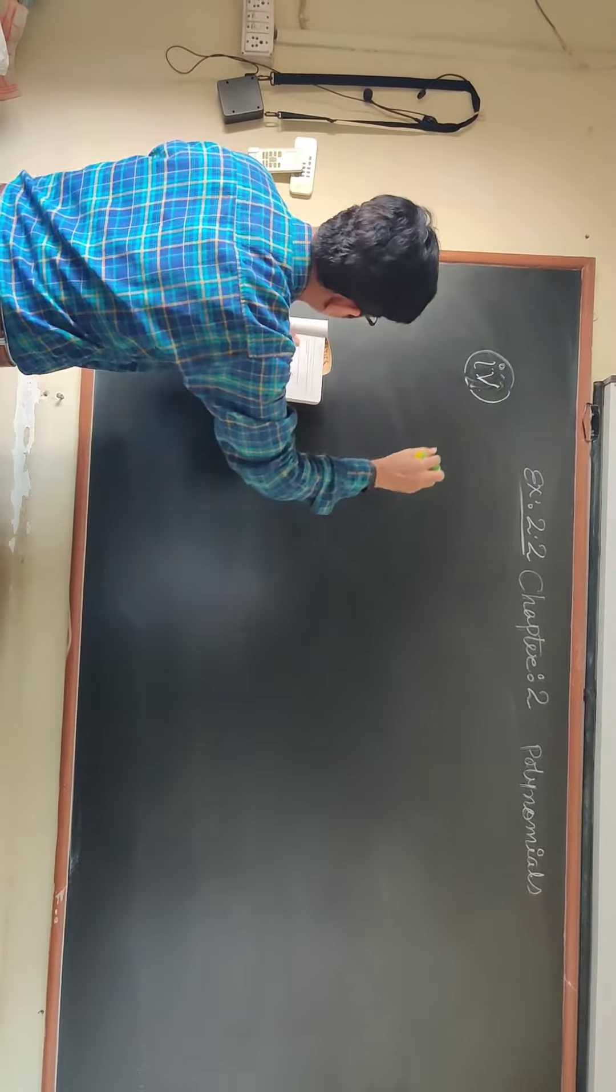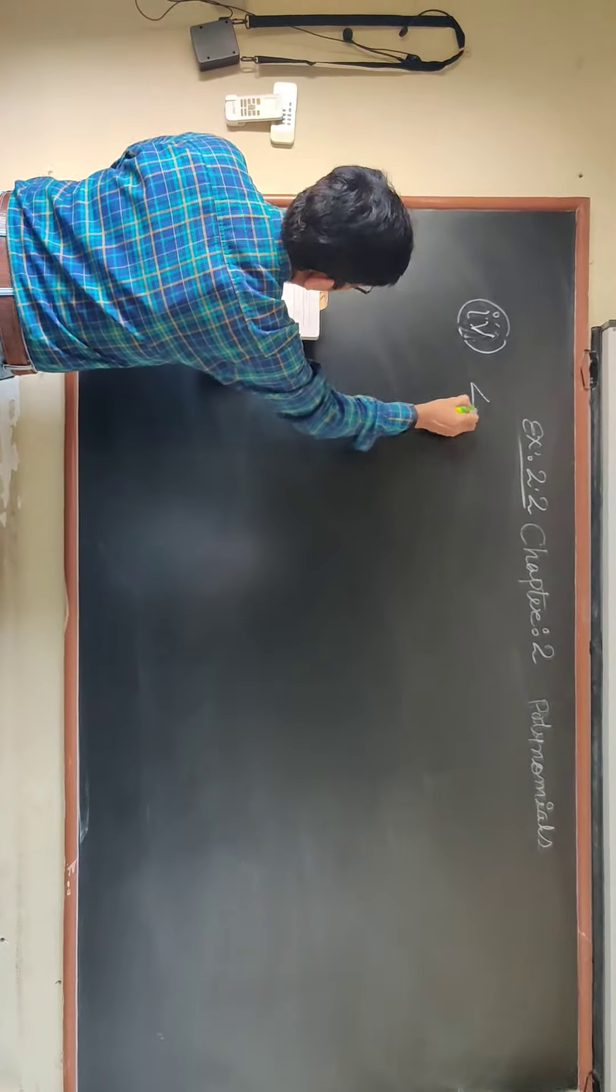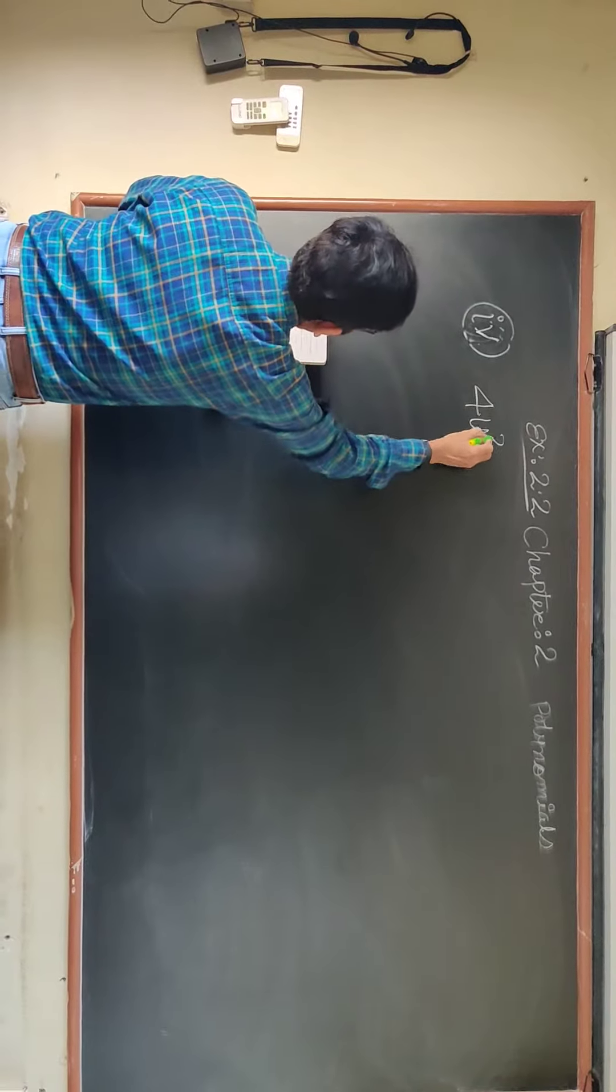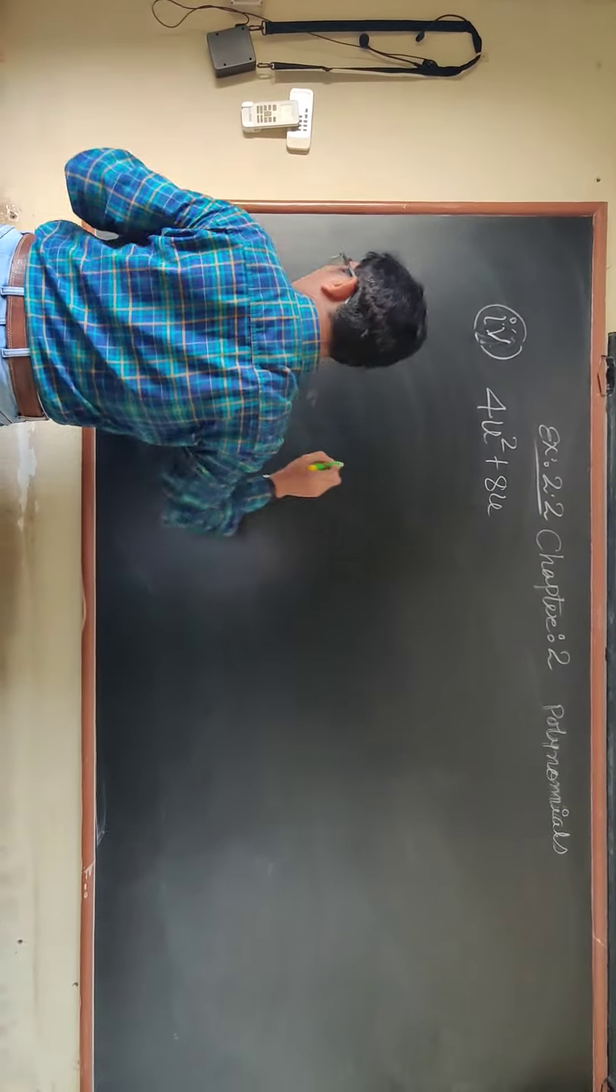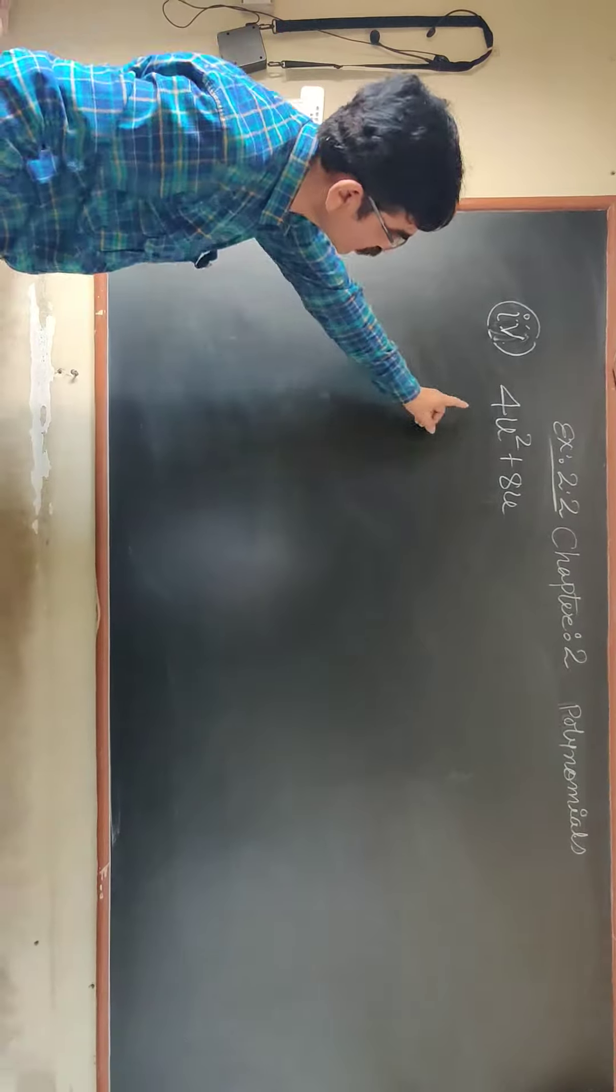We have done 1, 2 and 3 previously. Question is like that: 4u square plus 8u. Mind well, here there is no constant.